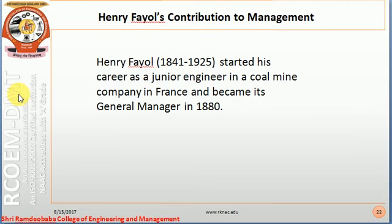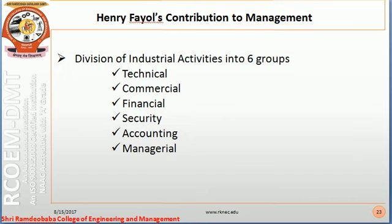Henry Fayol started his career as a junior engineer in a coal mine company in France, and became the general manager by 1880. What Henry Fayol proposed was very contemporary management, still relevant today. He proposed that industrial activities should be divided into six groups: technical, commercial, financial, security, accounting, and managerial. Each person should be assigned to one particular division only, promoting specialization.